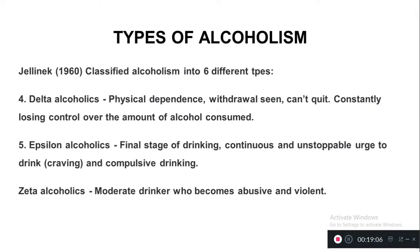The fourth type is delta alcoholics. They have physical dependence and withdrawal symptoms are seen. They cannot quit alcohol and are constantly losing control over the amount consumed, increasing the amount day by day. The fifth type is epsilon alcoholics — the final stage of alcoholism, where they continuously drink alcohol.